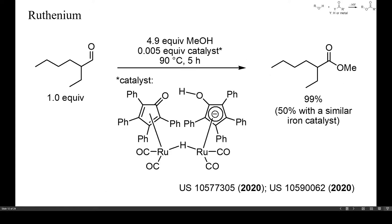In this example, no oxidant was required. Treatment of an aldehyde with an excess of methanol in the presence of a ruthenium catalyst gave a high yield of ester. A similar iron catalyst was much less effective.